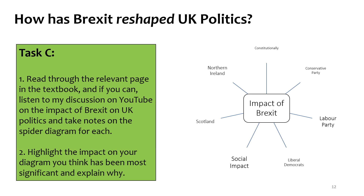Scotland voted to remain quite heavily — over 60% — whereas the whole of the UK voted to leave. That division between what Scotland wanted and what the UK wanted further exacerbated relations and the agreement between Scotland and the UK Parliament that had come after a quite close referendum in 2014 for Scottish independence. The SNP started banging the drum further for Scottish independence, saying: if we become independent now, our will — which was to stay in the EU — could be listened to, whereas if we remain in the UK, we're going to leave the EU. So Brexit fuelled greater demands for independence for Scotland.